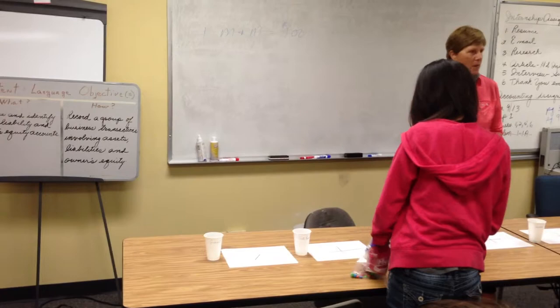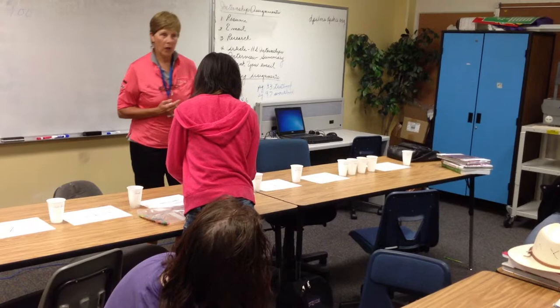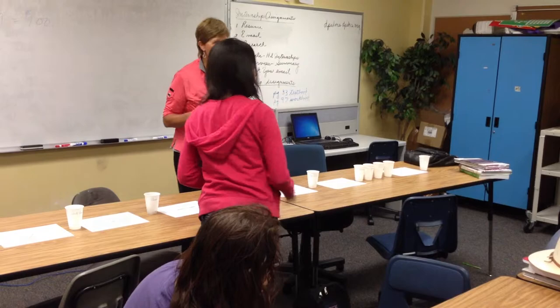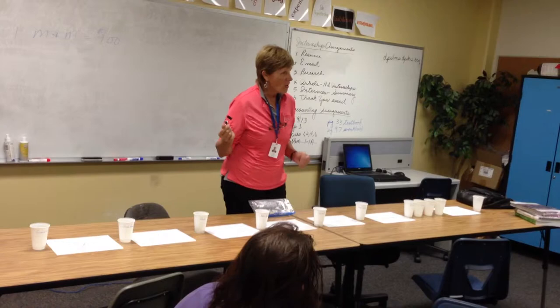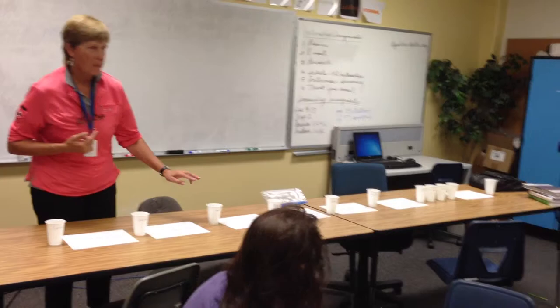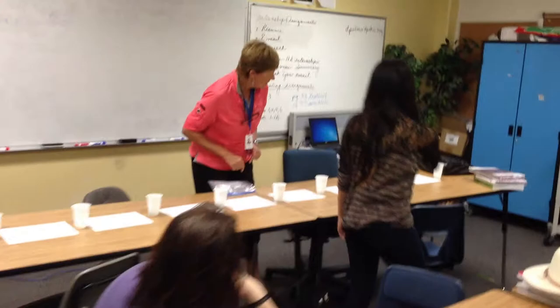Number three: you purchased $200 worth of supplies, paid cash. So we're paying cash — we're writing a check — so we're going to take M&Ms out of the cash cup. How many M&Ms? Two. And what are you paying for? Supplies. So we're moving our M&Ms around.